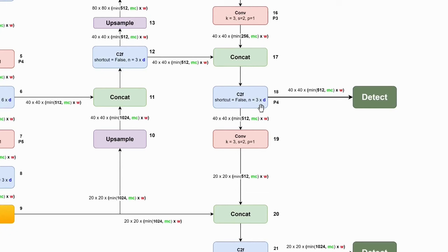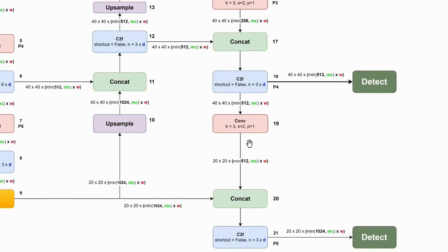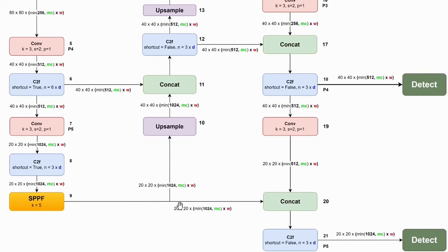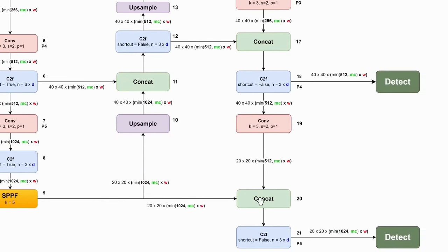The output of the medium-object detect block is also used as input to a convolutional block with kernel size 3, stride 2, and padding 1. Concat will then combine the feature map from this convolutional block with the feature map from the SPPF block. Finally, there is another C2F block whose feature map will be utilized as input for the detect block specialized for detecting large objects.